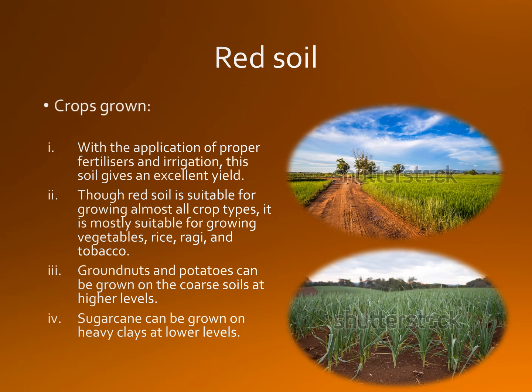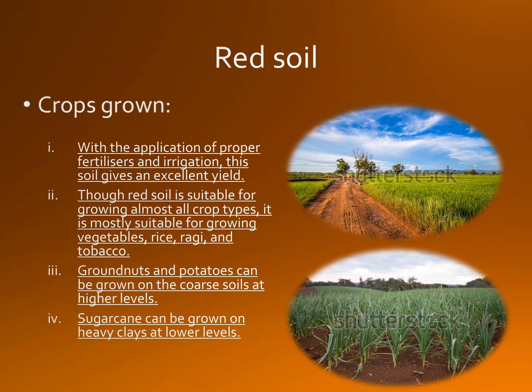The red soil is mostly loamy and hence cannot retain water like the black soil. Even though with application of proper fertilizers and irrigation, this soil gives an excellent yield. Though red soil is suitable for growing almost all crop types, it is mostly suitable for growing vegetables, rice, ragi, and tobacco. Groundnuts and potatoes can be grown on the coarse soils at higher levels, while sugarcane can be grown on heavy clays at lower levels.